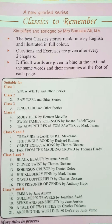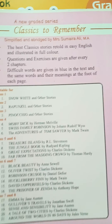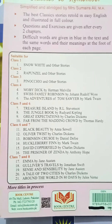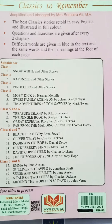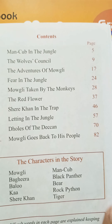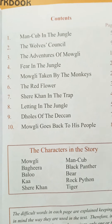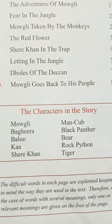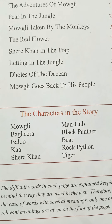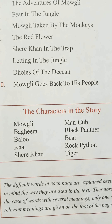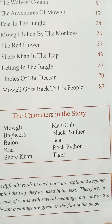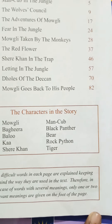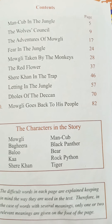This is the back page — a new graded series, Classics to Remember, simplified and adapted by Mrs. Sumaira Ali M.A. These are names of other books from the same publisher. Now this is the contents — how many lessons we are going to read? Insha'Allah, there are 10 lessons. Now see the characters in the story: Mowgli, Bagheera, Baloo, Kaa, Shere Khan — Man Cub, Black Panther, Bear, Rock Python, Tiger. These are the characters of the story.